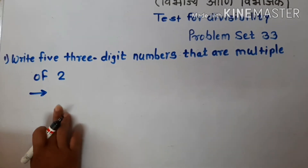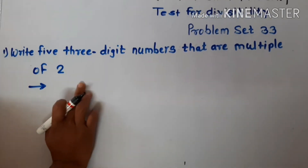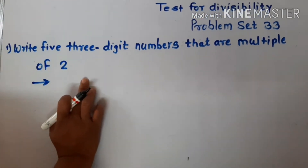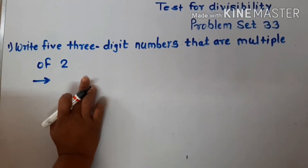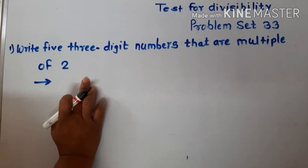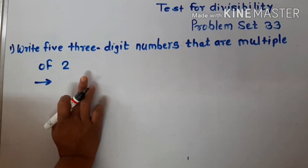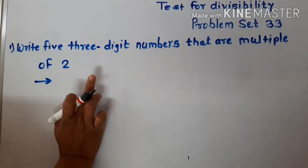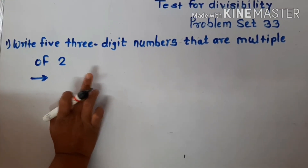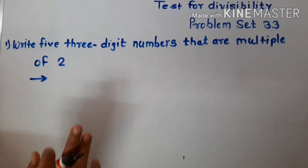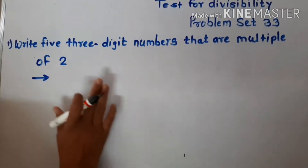We will now study the test for divisibility by 2. If there is a 0, 2, 4, 6, or 8 in the unit place, that number is exactly divisible by 2.